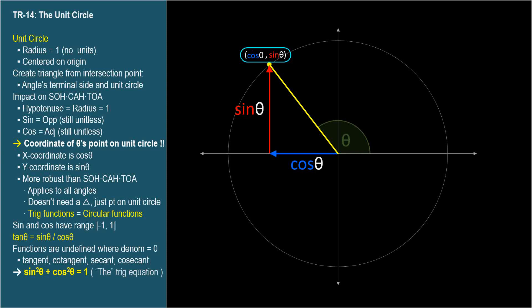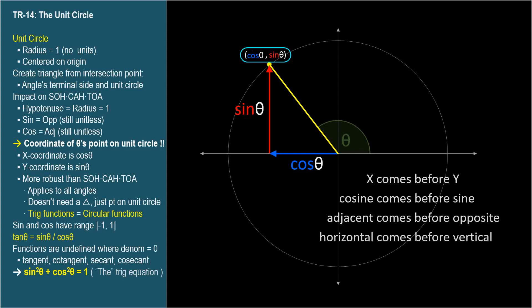This memory aid might help. X comes before y alphabetically, and cosine comes before sine alphabetically. That's how I remembered that x was cosine and y was sine. Also adjacent comes before opposite, horizontal comes before vertical, and even blue comes before red.